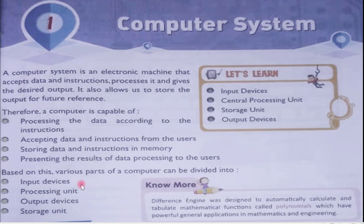In this chapter we will talk about these four things: input device, processing unit, output device, and storage unit. Input devices include keyboard, mouse, joystick, scanner, and touch screen. The processing unit is your CPU — central processing unit — simply called the brain of the computer. Output devices include speakers, monitor, and printers. Storage unit examples are pen drive, memory card, CD, DVD, and hard disk.